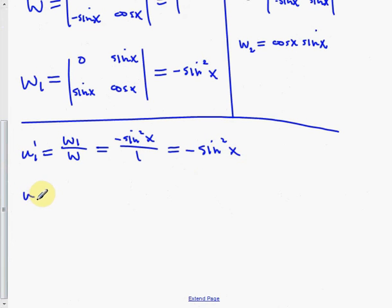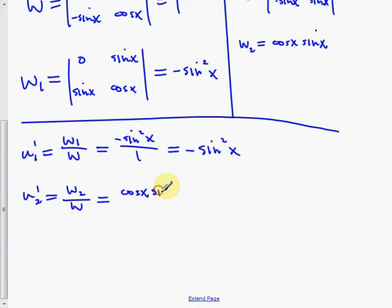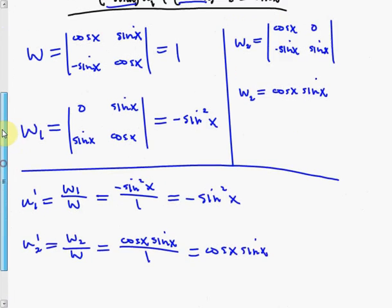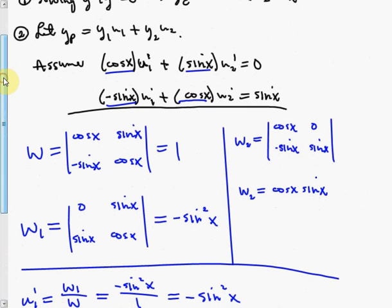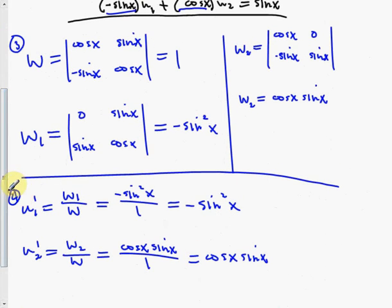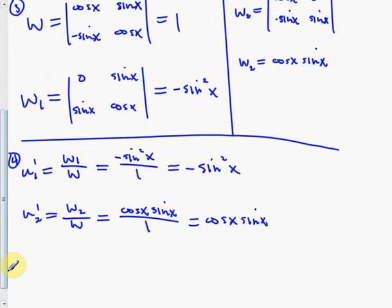W₂ keeps the first column [cos x, –sin x] and replaces the second column with [0, sin x]. The determinant gives cos x·sin x – 0 = cos x·sin x. So u₂' = W₂/W = cos x·sin x. That completes steps two, three, and four.